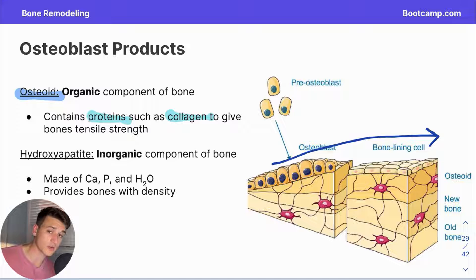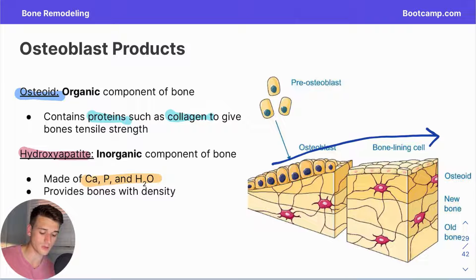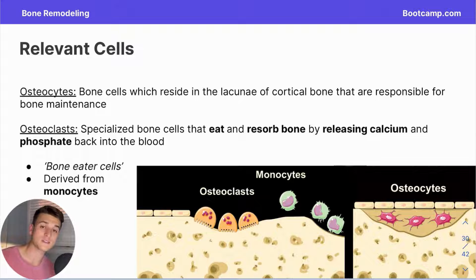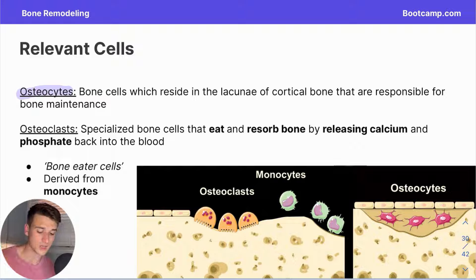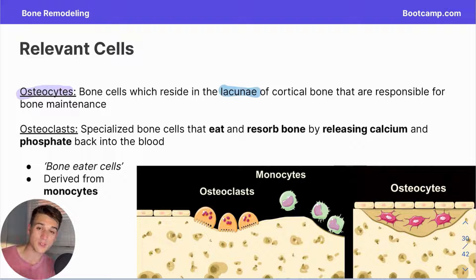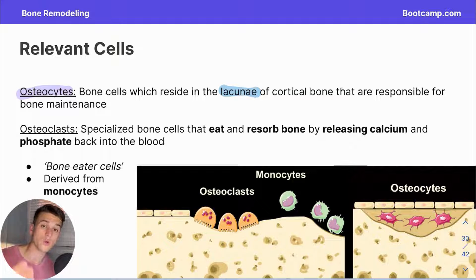There is also an inorganic component of bone produced by osteoblasts known as hydroxyapatite. Hydroxyapatite is formed of calcium, phosphorus, and water molecules, and is credited with providing bones their characteristic density. Osteocytes are the generalized bone cells that actually reside in the lacunae of the osteon. The lacunae are the small pockets that exist between the cylindrical lamellae, which make up the osteon — the functional unit of cortical or compact bone.